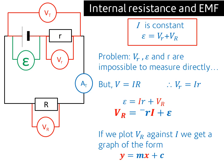where the gradient m is actually equal to negative internal resistance. And the intercept on the voltage axis, on the y-axis, is equal to the EMF. And that's how we find internal resistance and EMF of a cell.